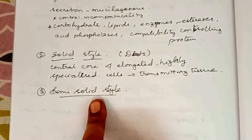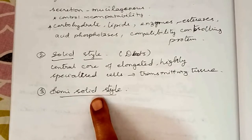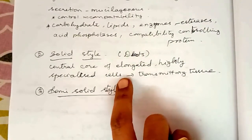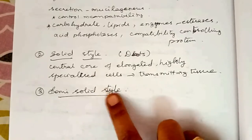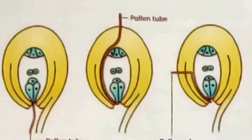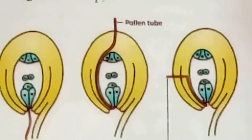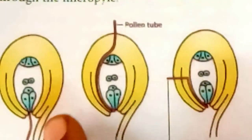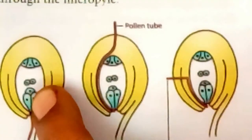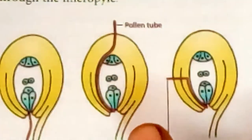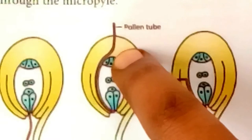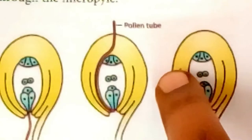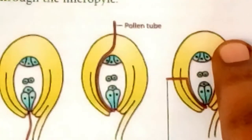The semi-solid or half-closed style is intermediate between hollow and solid styles, and there is difference of opinion about the nature of its transmitting tissue. Regarding pollen tube entry into the ovule, there are three types: porogamy, when the pollen tube enters through the micropyle directly; chalazogamy, when it enters through the chalazal end; and mesogamy, when it enters through the integuments.